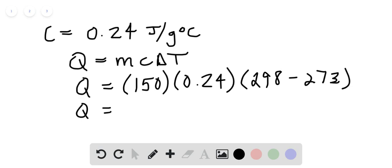And when I do the calculations, I come out with 900 joules even. So that is the amount of heat evolved when we take 150 grams of the silver and raise it that many degrees Kelvin.